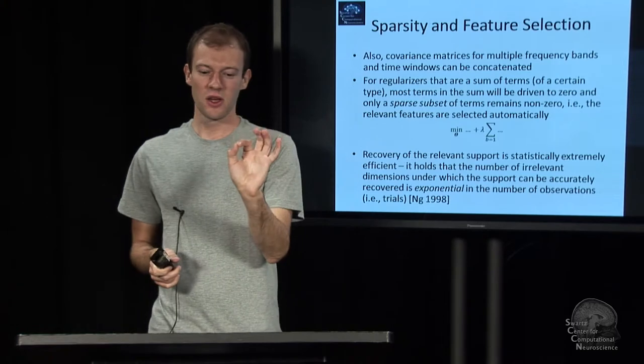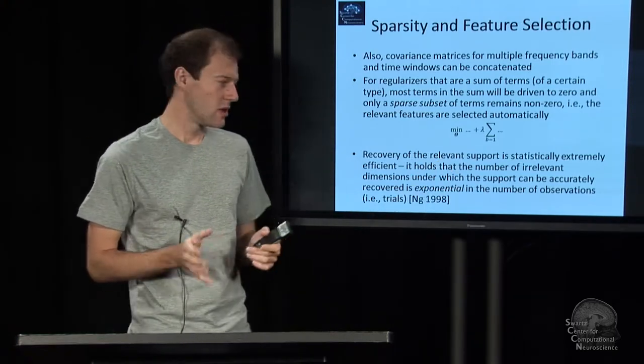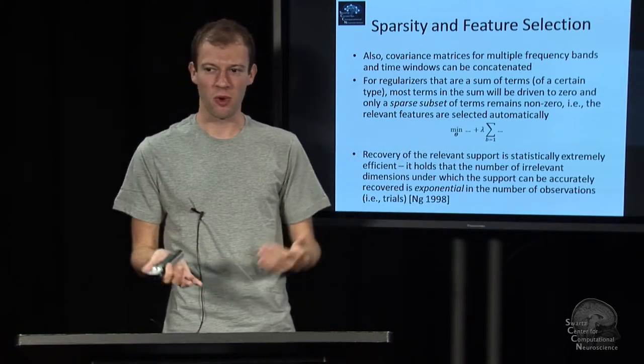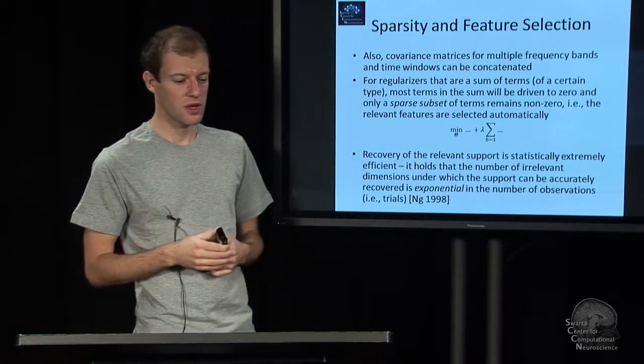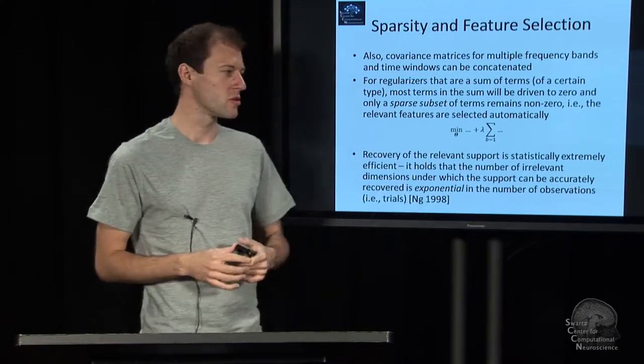And it doesn't necessarily mean that a feature is set to zero or things like that. It can be things like the rank of a matrix is low or various combinations of these. So it can be rather subtle functions of your weight matrix.